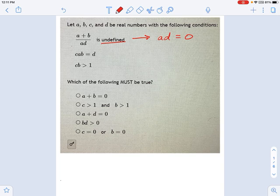All right. Now, the next clue is interesting. C, A, B equals D. Think about the possibilities here. From this first one, I've got either A equals zero or D equals zero. Or, it's possible A and D both equal zero. Okay, so here's your possibilities.